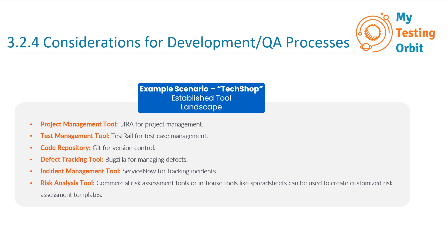Maintaining consistency and transparency in the software development and testing processes. In this scenario, the alignment of test execution control, reporting requirements, role and access rights, and integration with established tools ensures that testing is efficient, secure, and well documented, ultimately leading to a high-quality e-commerce website for users to enjoy.